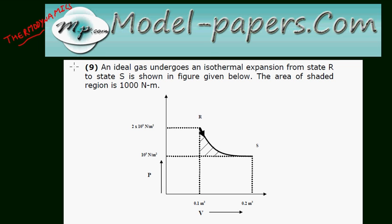This is question number 9. An ideal gas undergoes an isothermal expansion from state R to state S as shown in the figure given below. The area of shaded region is 1000 N·m.